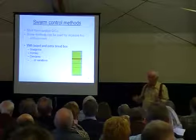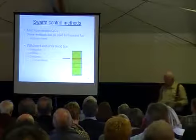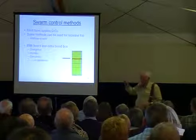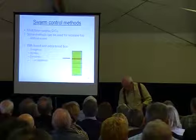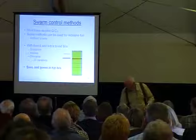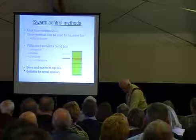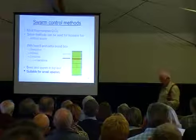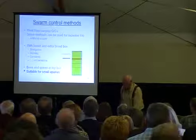You end up with a board there - the bottom brood chamber which is usually new comb, a super above, then the board, then the old brood chamber above. The basic principles of all of them are exactly the same. There are lots of benefits with those too - you end up with bees and queens usually in the top box. Very suitable for small apiaries too, though not great if you've got out-apiaries or big numbers. But with those you end up with new comb as well.